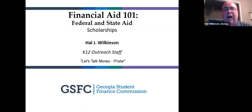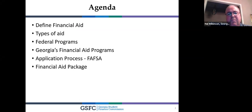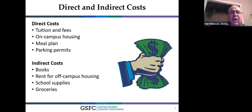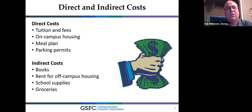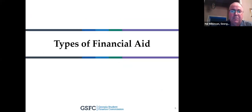Again, I'm Hal Wilkinson with the Georgia Student Finance Commission, your K-12 outreach staff — we administer the HOPE Scholarship. We're going to discover different resources for help paying for your education. Financial aid helps pay for educational expenses. You have direct costs, which go straight to your institution, and indirect costs, which students have more control over. Cost of attendance is the combined estimate of both. How are you going to pay for all this?